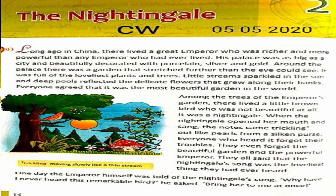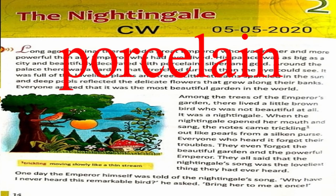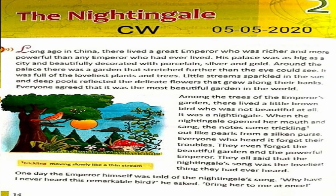Remember that you have to keep the pencil in your hand and keep underlining the words I tell you to underline. Long ago in China there lived a great emperor who was richer and more powerful than any emperor who had ever lived. His palace was as big as a city and beautifully decorated with porcelain. Please underline 'porcelain.' Porcelain is a substance used for decorative purposes — it is used to make cups, plates, decorations, etc., similar to how we use marble to decorate houses.